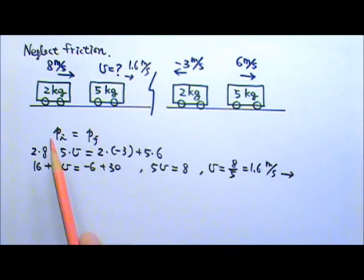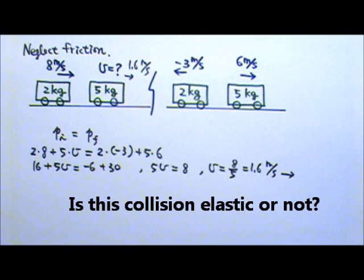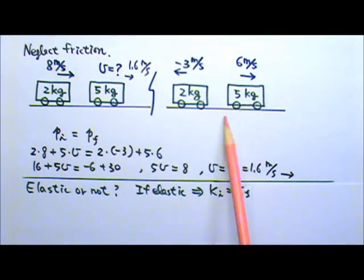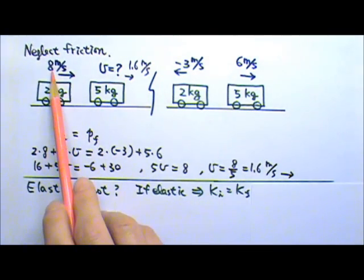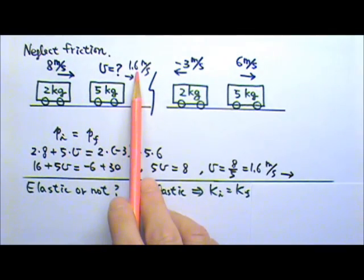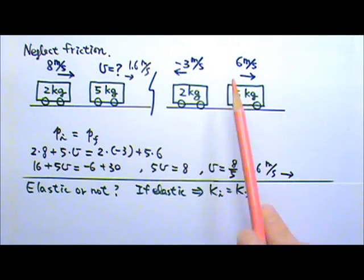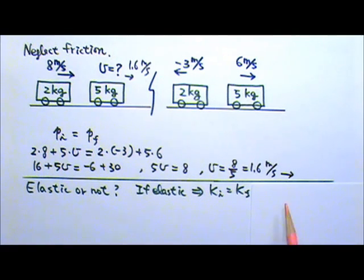What if we want to determine whether this collision is elastic or not? We know that if a collision is elastic, its kinetic energy will be conserved. So we can check whether the total kinetic energy before equals the total kinetic energy after. Even simpler, we can just check whether approaching speed equals separating speed — that's an easier calculation.